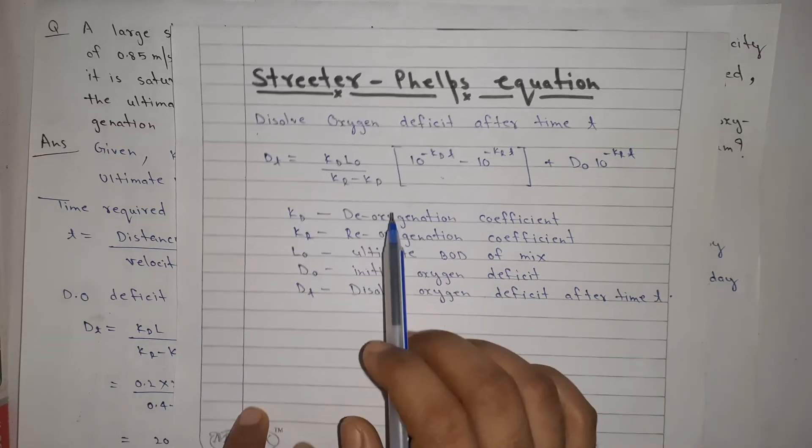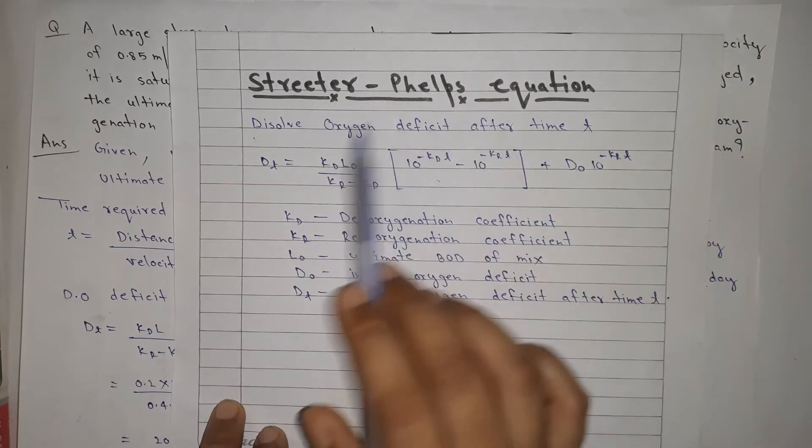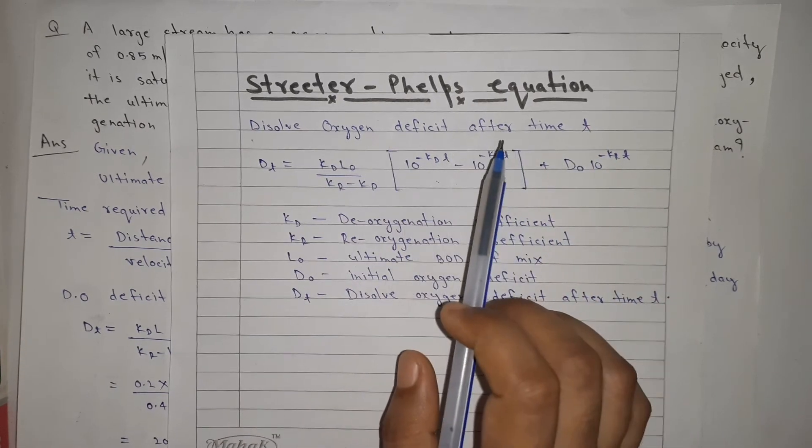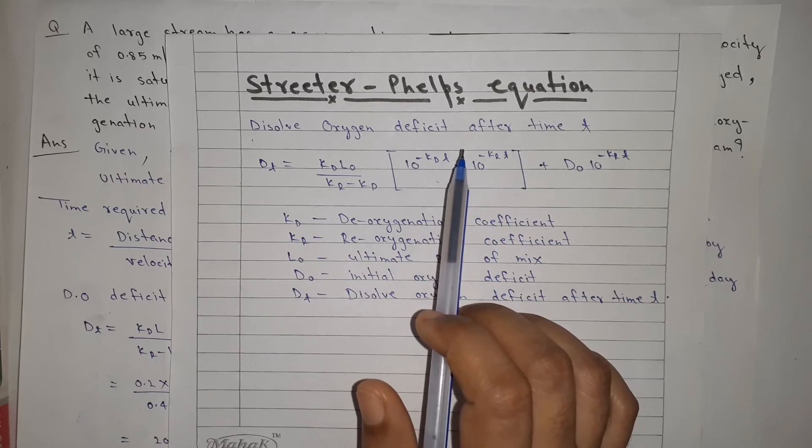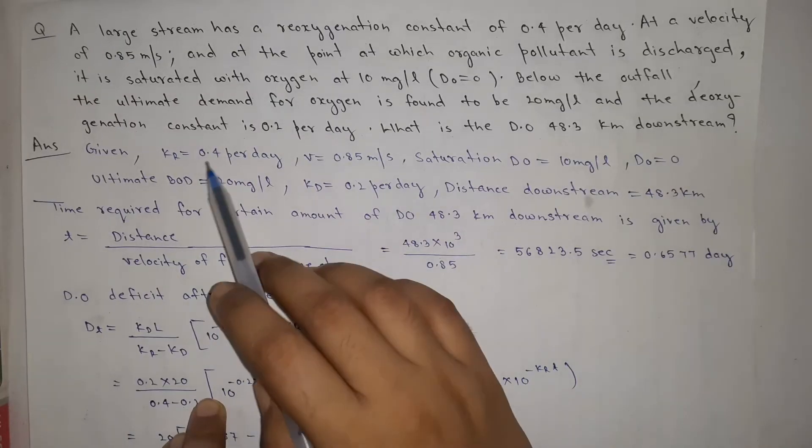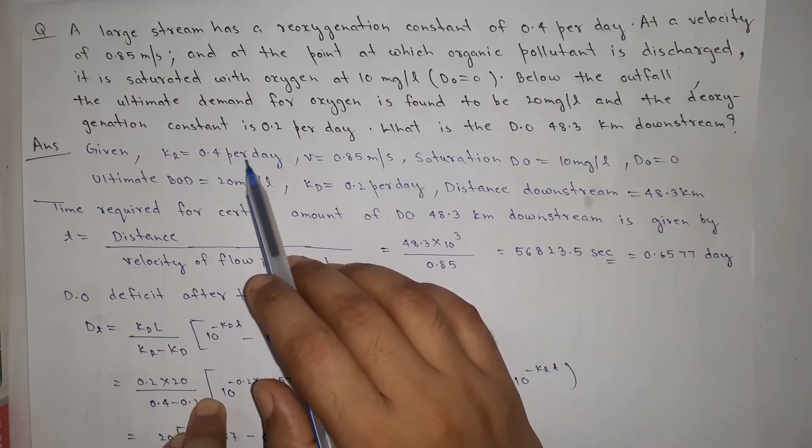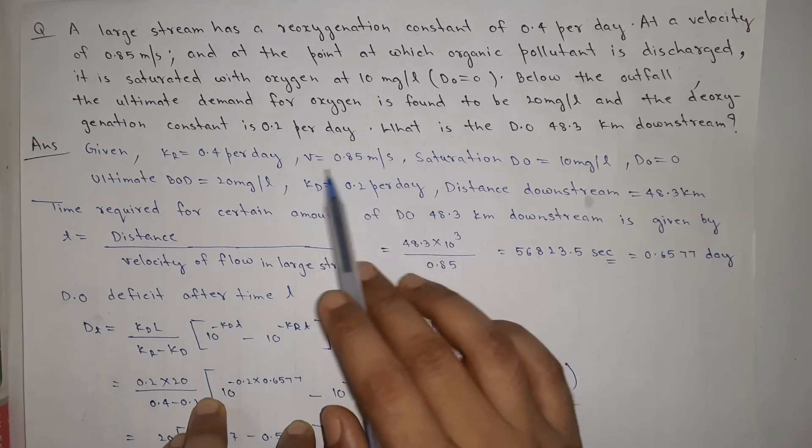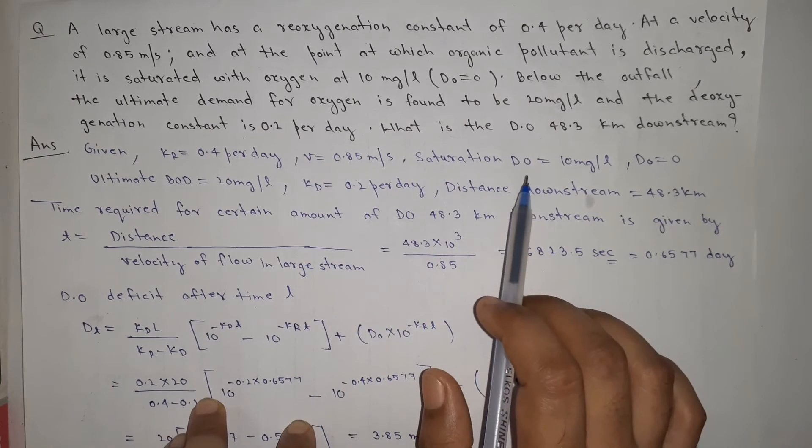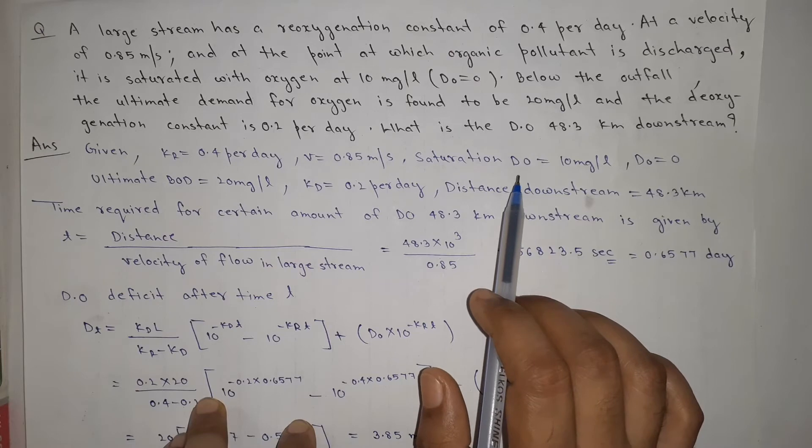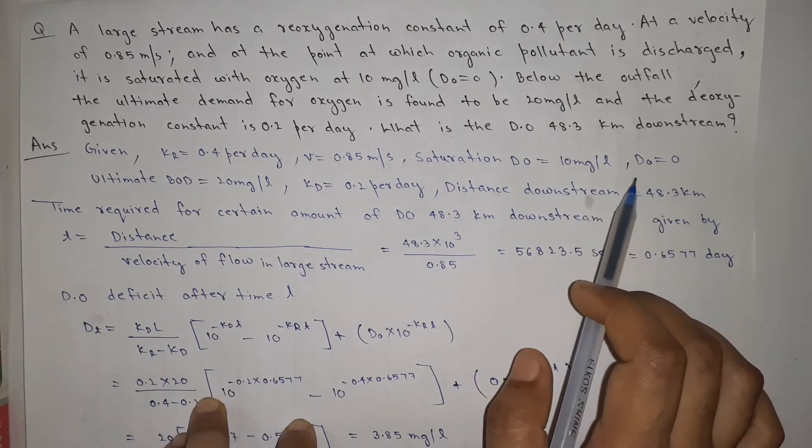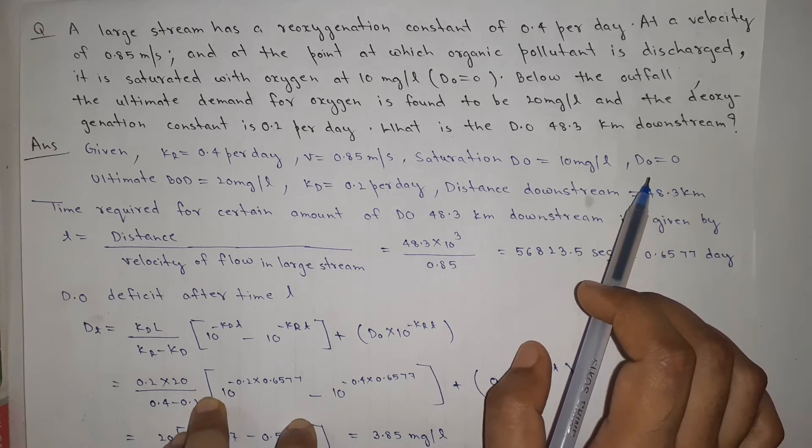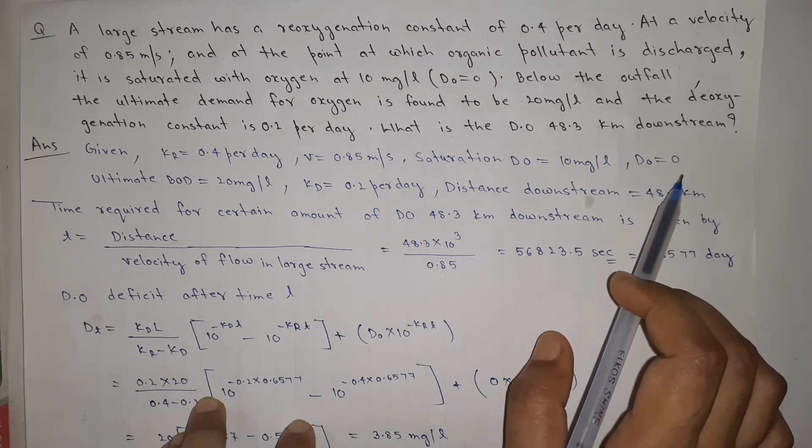This is our Streeter-Phelps Equation which tells us that at any time T, how much oxygen deficit will be in our river or stream. Now, what is given? We have given the river velocity, saturation DO, and D0 means initially there is no deficit in dissolved oxygen, it is zero.